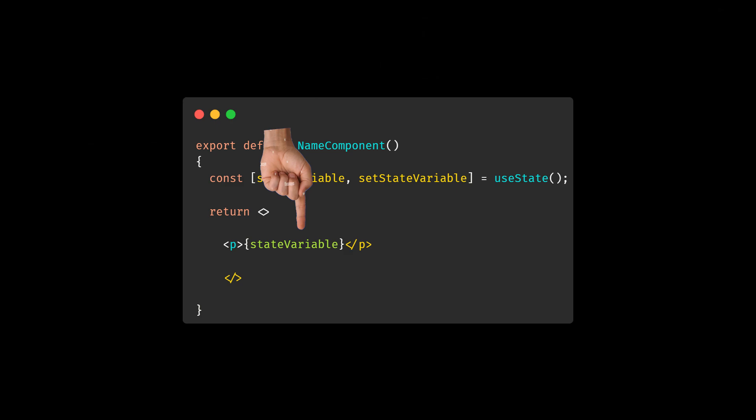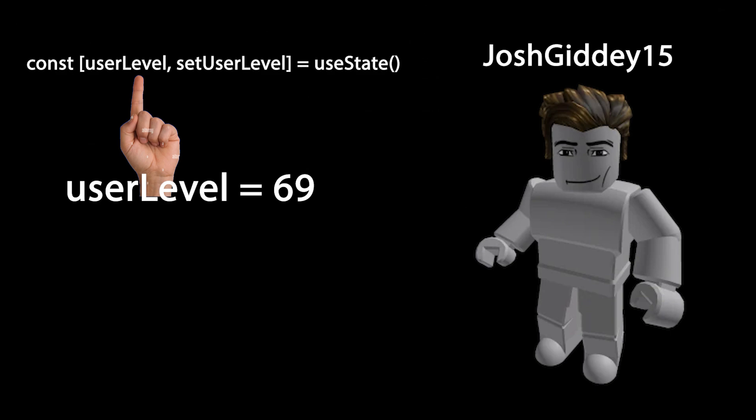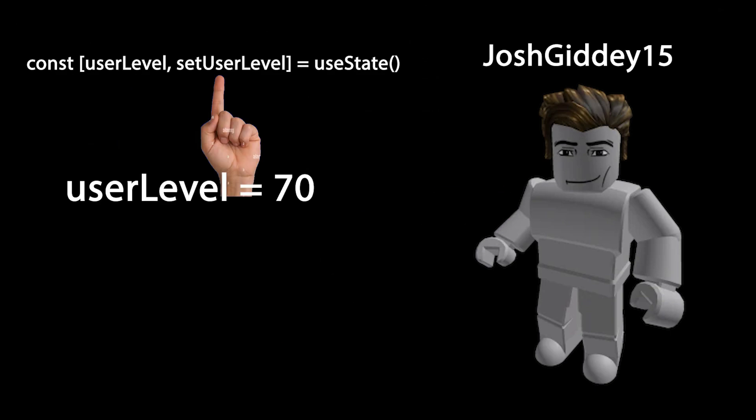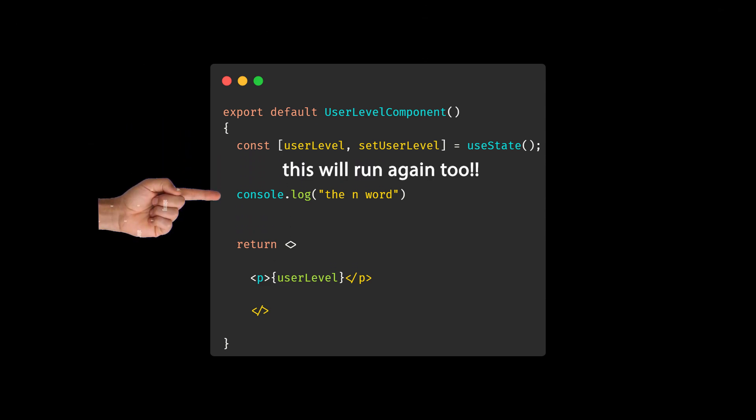Throughout the rest of the program, you can use this state variable as a storage point for data. For example, if we have a state variable for a user's level in an online game, that data is stored in the first variable. If the user levels up, you call the callback function. When the programmer changes the state of the variable, a re-render is called — meaning the area of HTML using the stateful variable will re-render on top of the rest of the component. You do not want to create an ever-rendering loop that pings an AWS service five million times a second, causing you to incur generational debt.